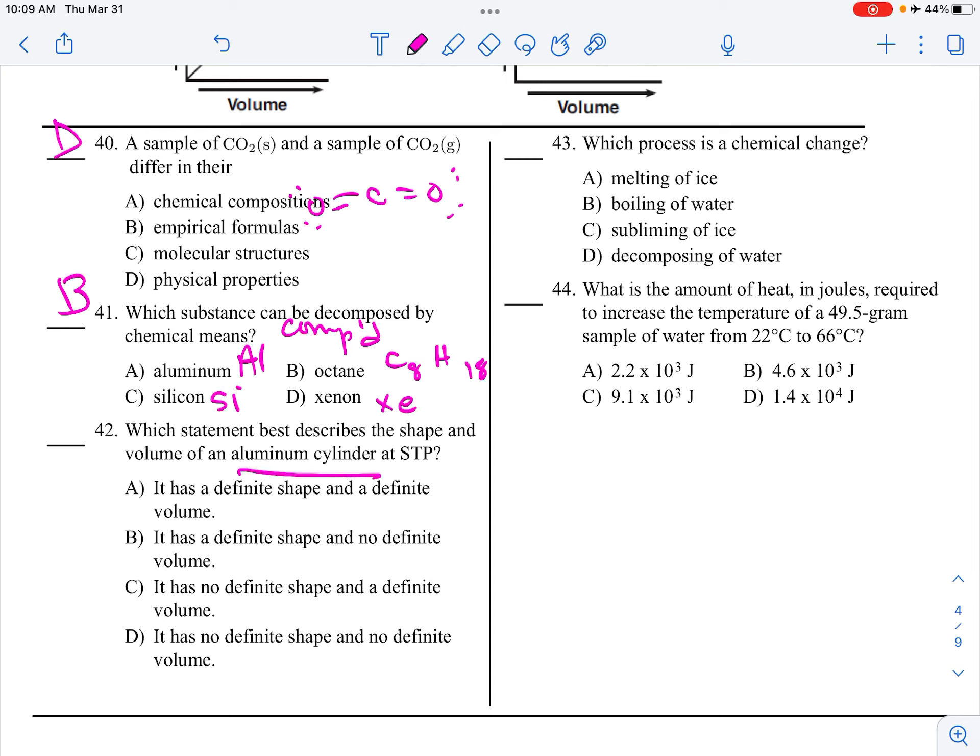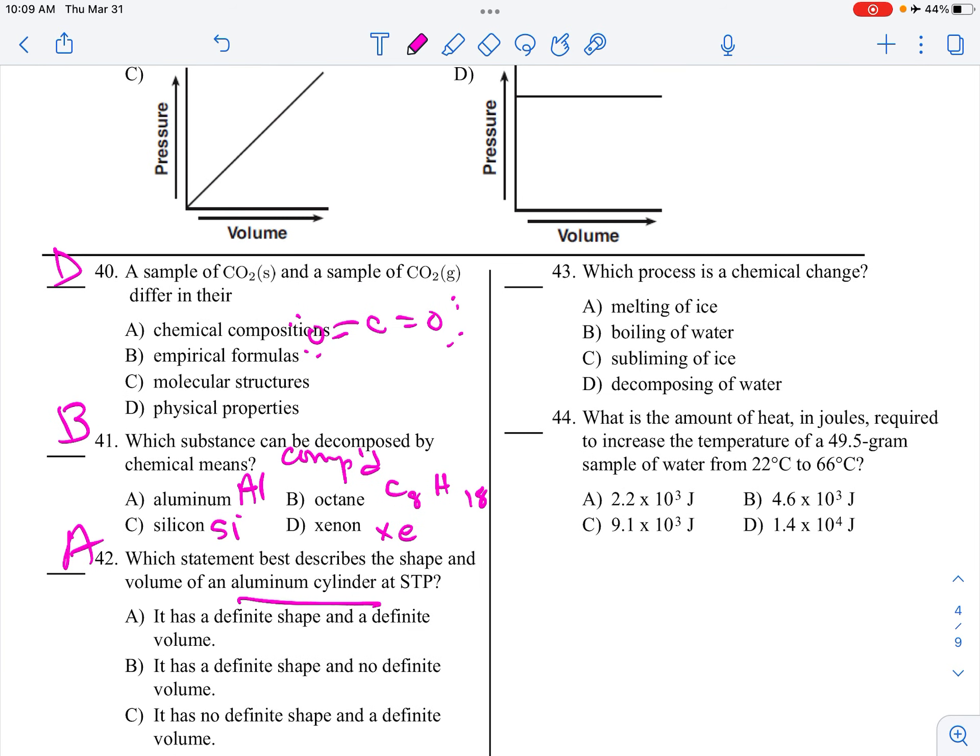Which describes the shape and volume of an aluminum cylinder at STP. So, aluminum cylinder, that's a solid, definite, definite. So, that would be A. Chemical changes change the actual bonding structure. When ice melts, it's still H2O. When water boils, it's still H2O. When ice sublimes, that's H2O solid to H2O gas. Decomposing water would mean H2O becoming H2 and O2. Breaking of bonds, rearranging things.